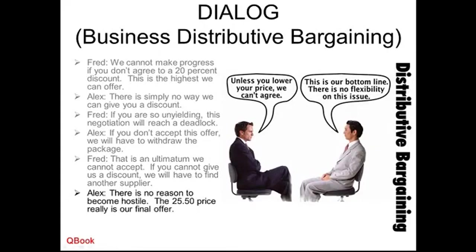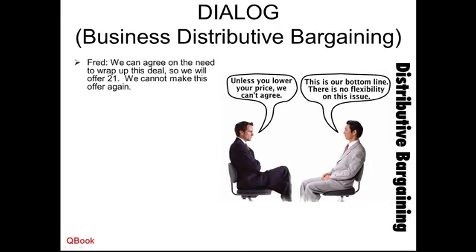And Alex responds: there is no reason to become hostile — the $2,550 price really is our final offer. Don't become hostile means don't fight, don't get angry. Even if you get angry, I can't give you any discount. So in this case, we can see they're not making much progress.